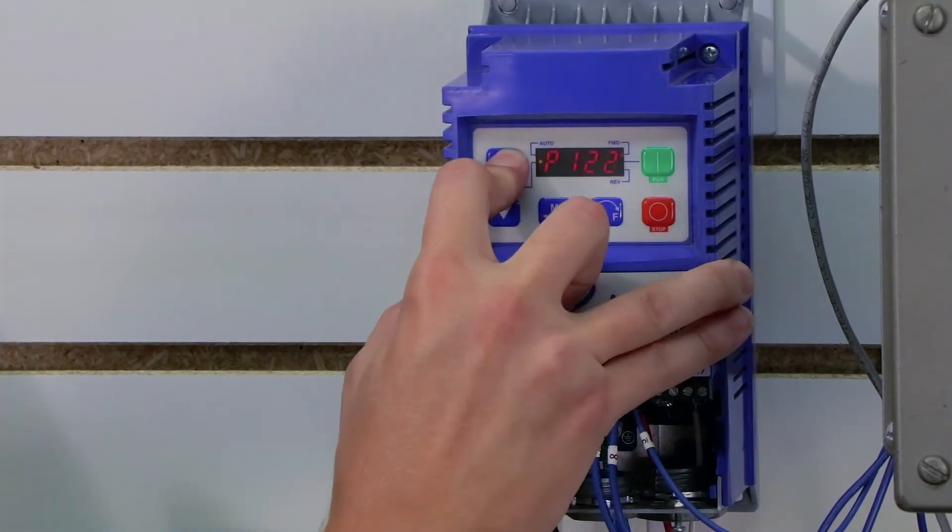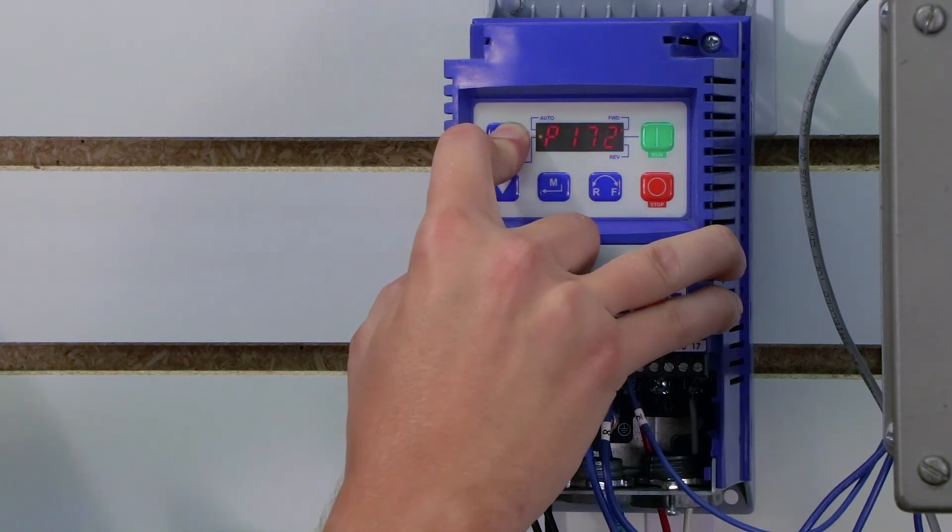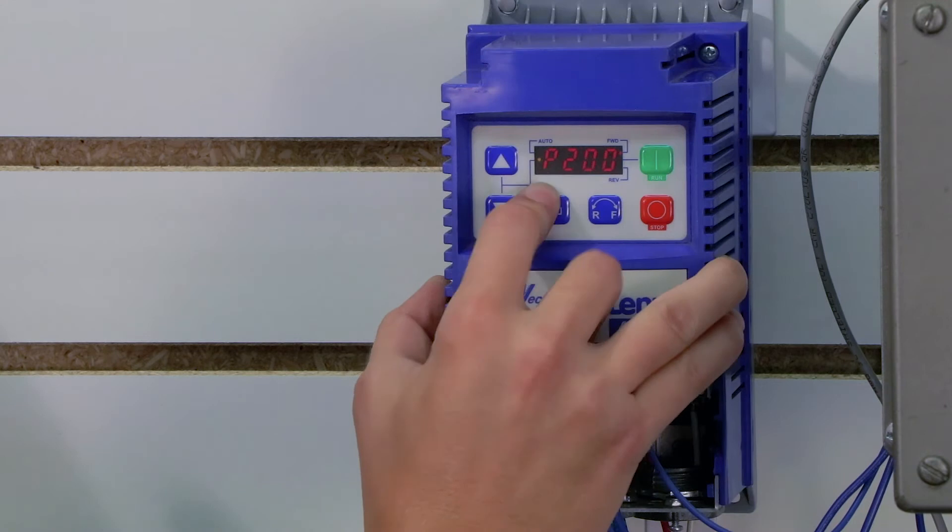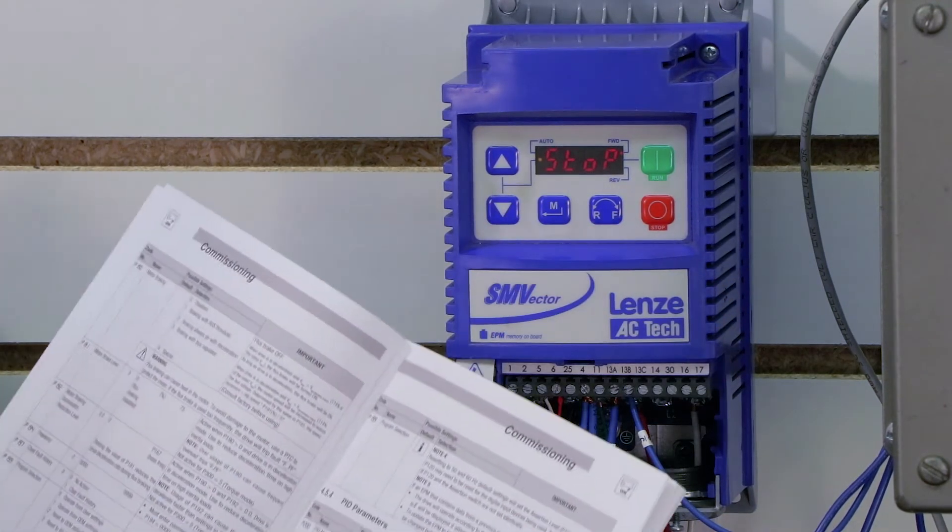So let me go to parameter 200. 200, go up. 200. And we're going to set that to 1. Press Enter. And that turns on PID mode.